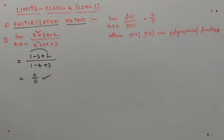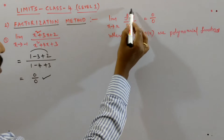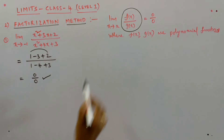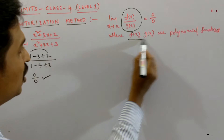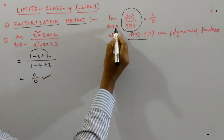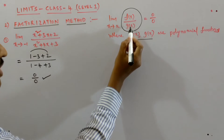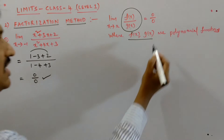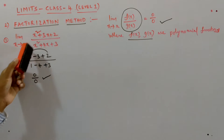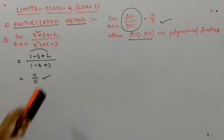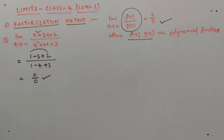When do we use the factorization method? When the given function is of the form f(x) divided by g(x), where f(x) and g(x) are polynomial functions, we put x equals to a in f(x) and g(x). If it gives an indeterminate form, then we use the factorization method. As we substituted x equals to minus 1 here and got an indeterminate form, we use the factorization method.